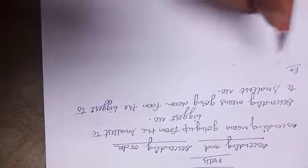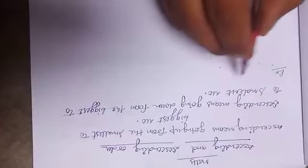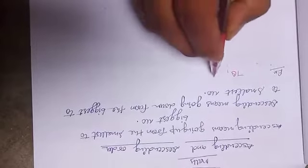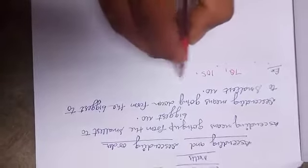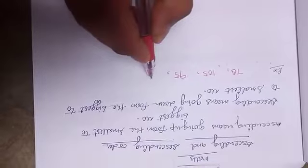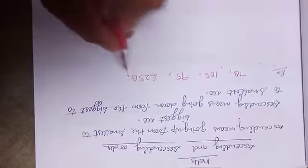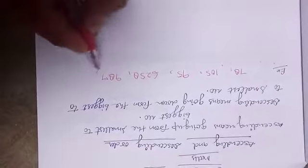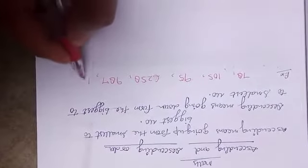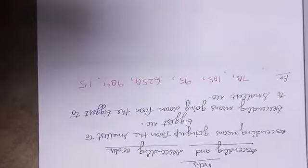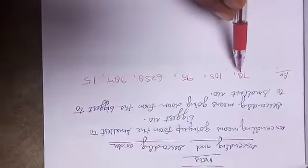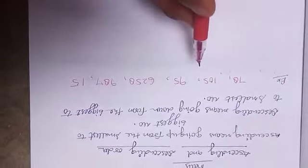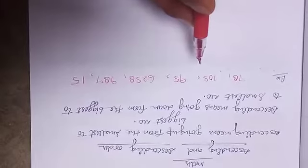For example, these are the numbers: 78, 105, 95, 625, 8, 98, 7, and 15. Now we have to arrange these numbers in ascending order.